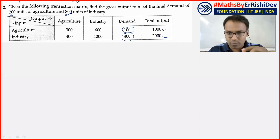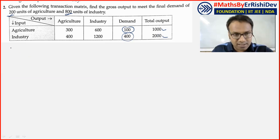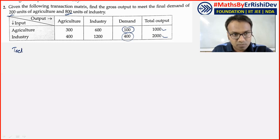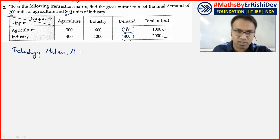Let's understand the process systematically, assuming you have seen Video 1. The first job is to make the technology matrix. Step 1 is to create the technology matrix, denoted as A in standard notation.